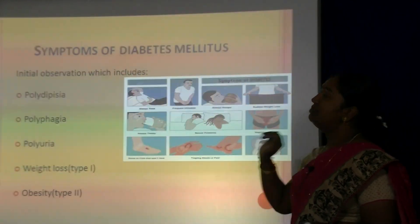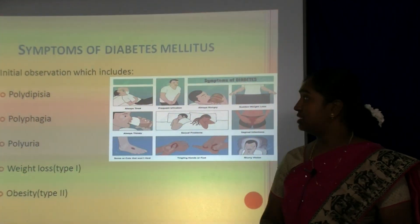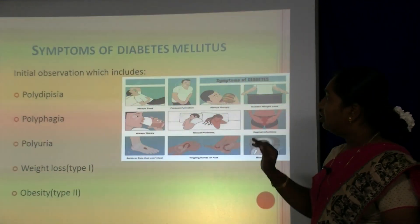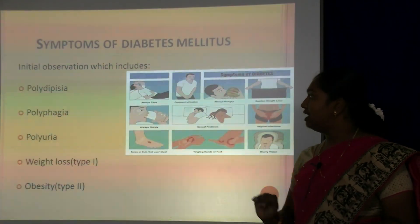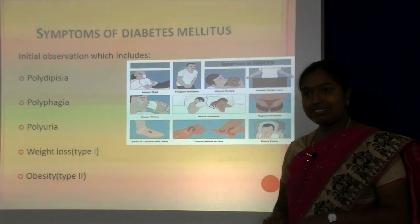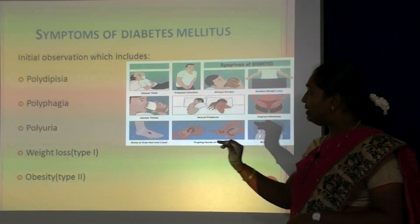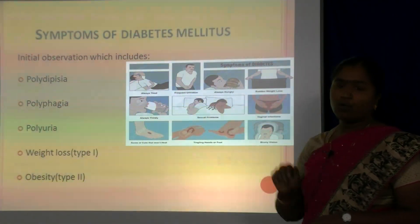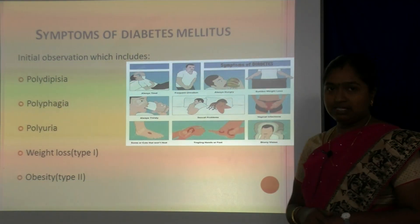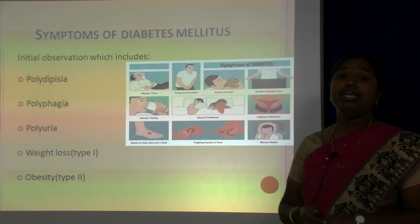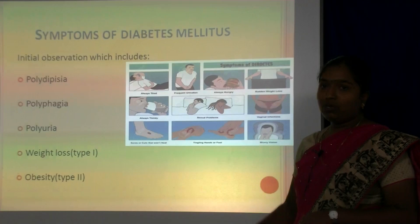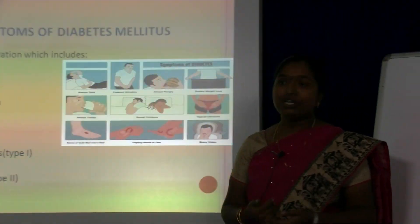The initial symptoms of diabetes mellitus include polydipsia — increased thirst — polyphagia — increased hunger — and polyuria — frequent urination — along with weight loss in Type 1 and obesity in Type 2.